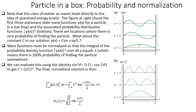The wave function must be normalized so that the integral of psi* psi over all x equals 1, meaning there is 100% probability of finding the particle somewhere. We use the identity sine squared theta equals (1/2)(1 - cos 2 theta) to evaluate the normalization integral, which gives C equal to the square root of 2/L.